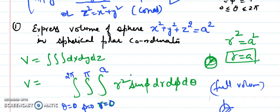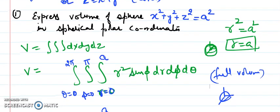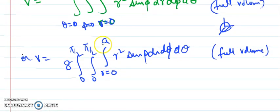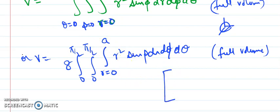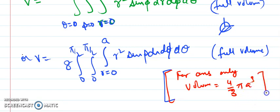So this is the expression in spherical polar form. If your task is only to find the volume of the sphere, the direct formula is: Volume = (4/3)πa³.